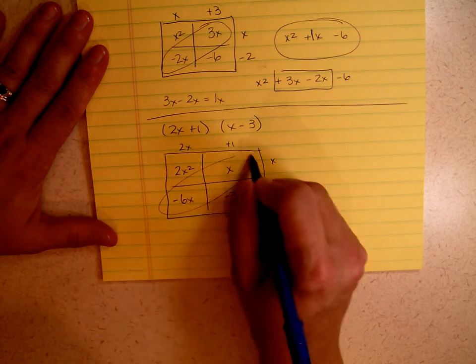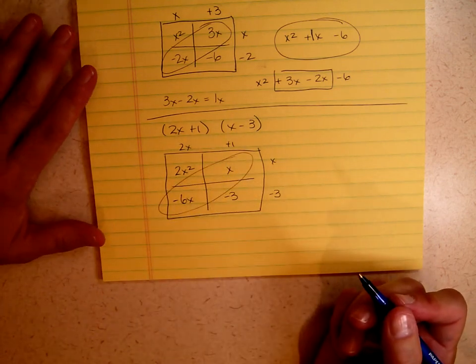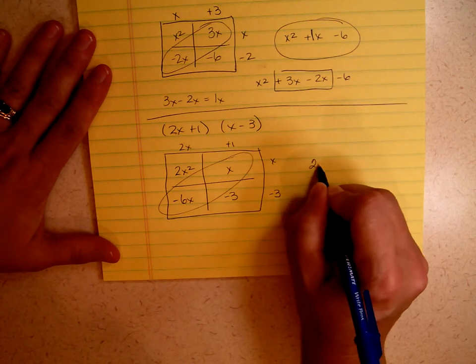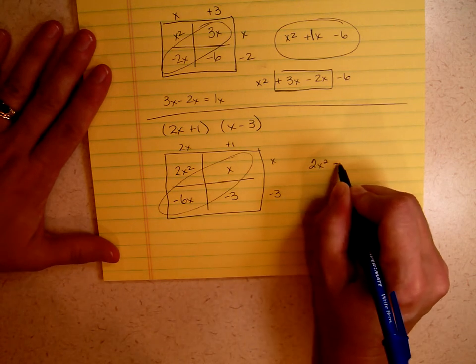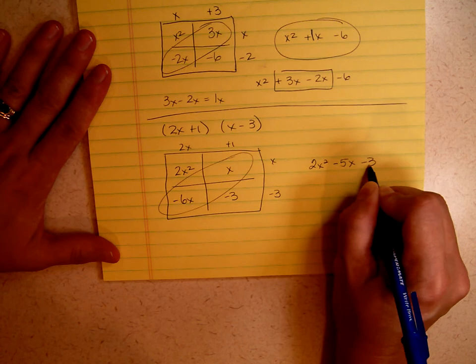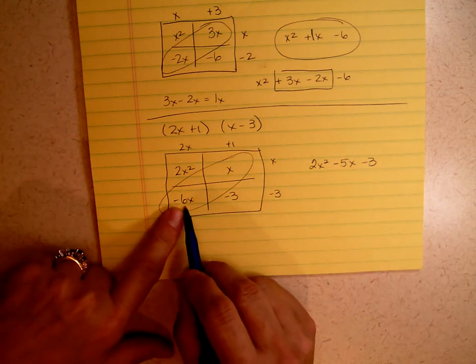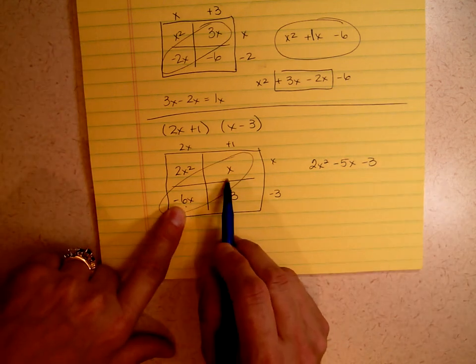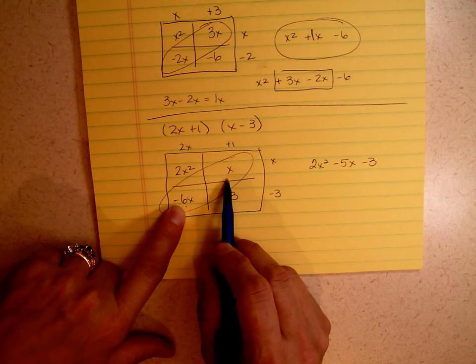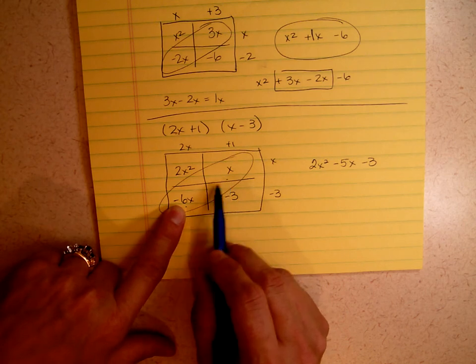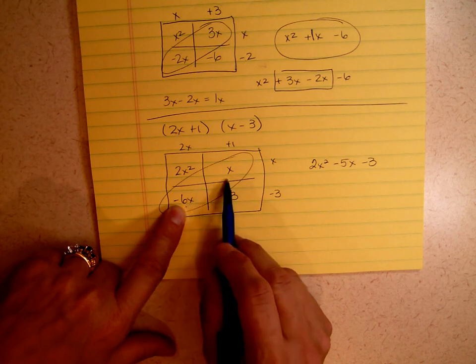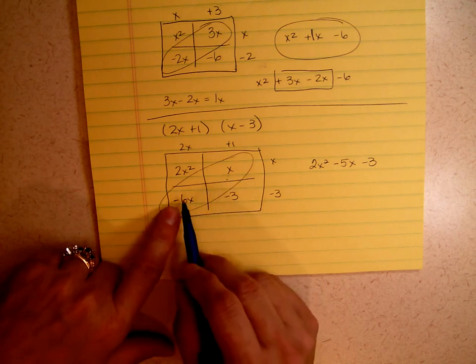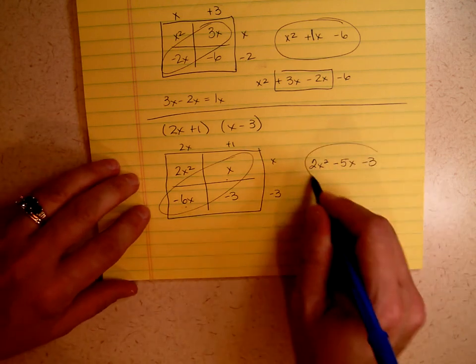Most of the time when you do this, you'll find at least one area where you can put the numbers together. I have 2x squared minus 5x minus 3. My minus 5x came because I had negative 6x plus 1x. Remember, if the signs are different, you always subtract and keep the sign of the bigger number. So 6 minus 1 is 5. But 6 is bigger than 1, so I'm going to keep this sign. So here's your answer.